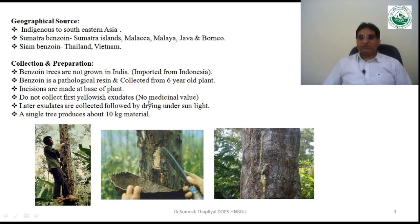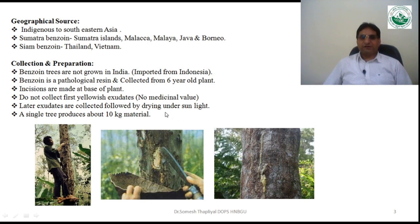Initially, the plant excretes a yellow-colored exudate that has no medicinal value and should not be collected. After this yellowish exudate is complete, the subsequent exudate should be collected and dried under sunlight. Annually, one tree can yield approximately 10 kilograms of benzoin.